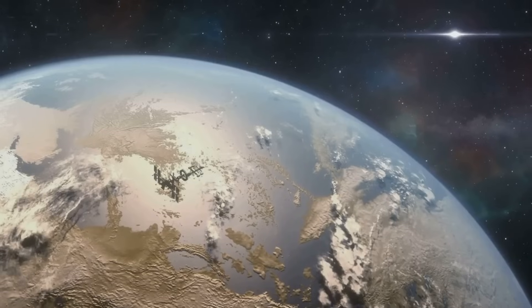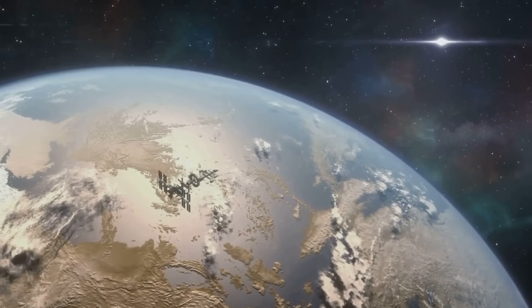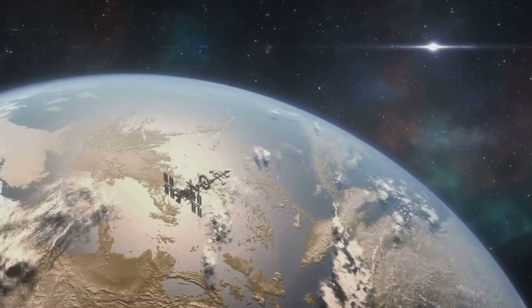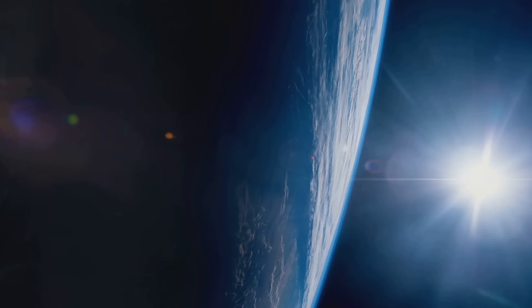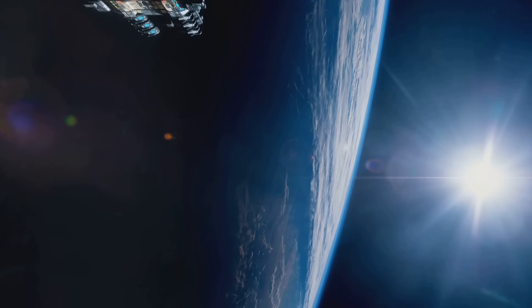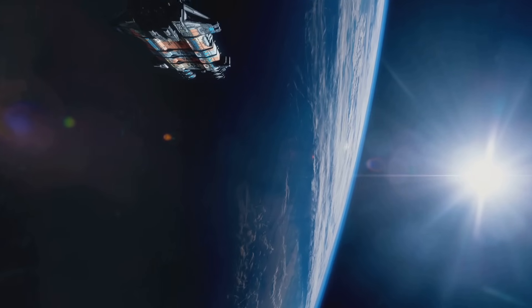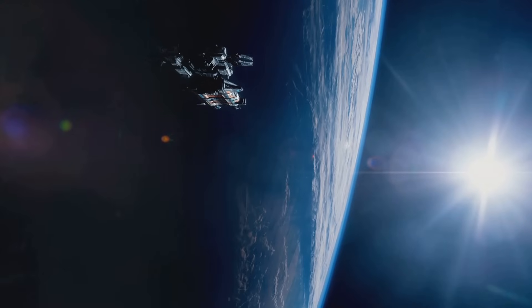A planet too small won't have enough gravitational pull to hold an atmosphere, one too large, and its gravity could create extreme conditions unsuitable for life. So a habitable planet needs to be just the right size with just enough mass. Then there's the matter of a stable orbit.